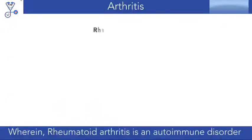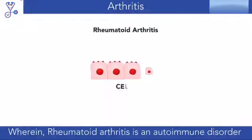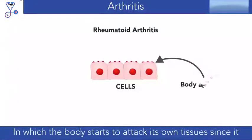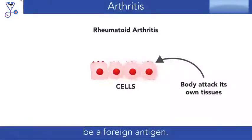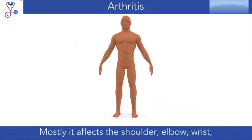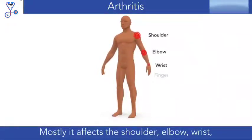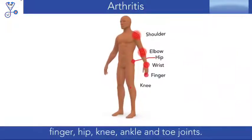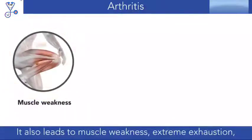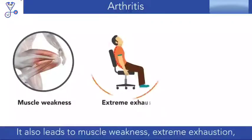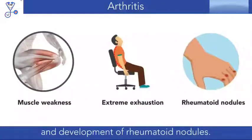Rheumatoid arthritis is an autoimmune disorder in which the body starts to attack its own tissues, since it is unable to recognize them as its own and confuses them to be a foreign antigen. It mostly affects the shoulder, elbow, wrist, finger, hip, knee, ankle, and toe joints, and also leads to muscle weakness and extreme exhaustion.